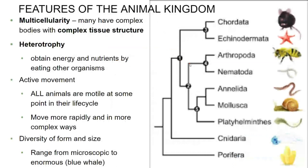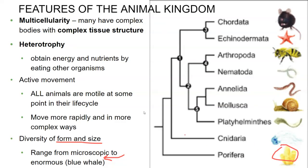Kingdom Animalia is incredibly diverse. It involves organisms that are microscopic, very small like a flea, all the way up to the great blue whale, the largest organism on Earth. Very big diversity of form and size, but every single one of these organisms, whether we're talking about a sea sponge or a great blue whale, is going to be multicellular with different tissue structures.